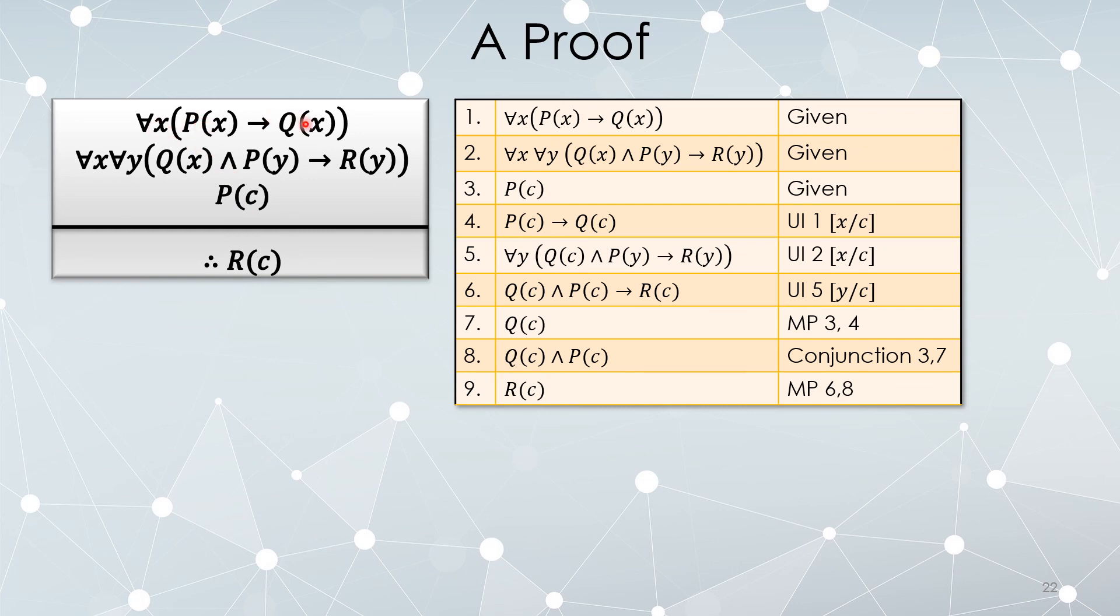Now, for any x, P(x) implies Q(x), so P(c) would therefore imply Q(c). If you had P(c) and Q(c), then you would have R(c). And that's the argument that we've formalized over here.